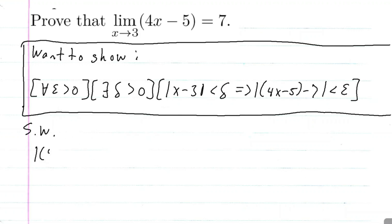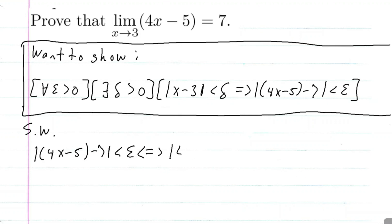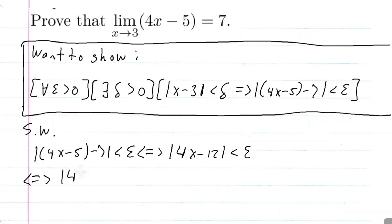We have the absolute value of 4x minus 5 minus 7 less than epsilon. Doing some arithmetic, 4x minus 5 minus 7 is 4x minus 12. So that's the absolute value of 4x minus 12 is less than epsilon. And then I can factor out a 4 — technically, factor out the absolute value of 4 — so the absolute value of 4 times the absolute value of x minus 3 is less than epsilon.